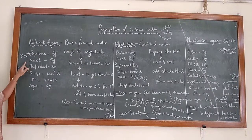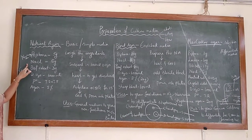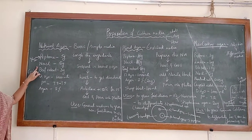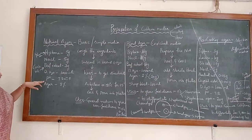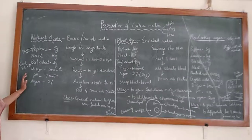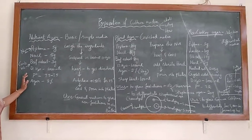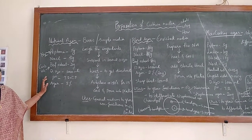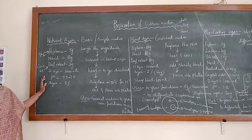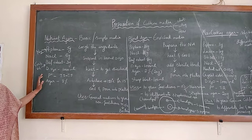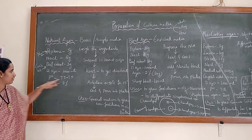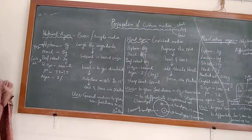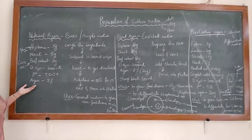NaCl is used to regulate osmotic balance and maintain the pH of the culture media. Whenever we prepare culture media, we should check the pH before sterilization, because each microorganism grows only at an appropriate and optimum pH value. pH plays a very important role during preparation of the medium.